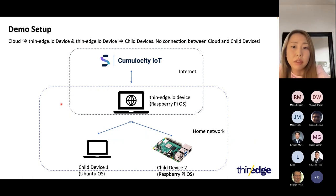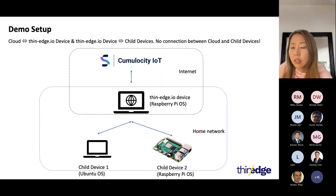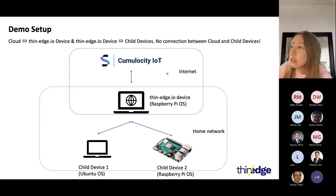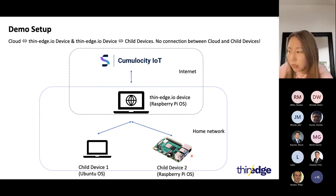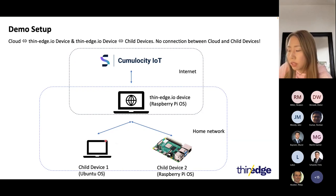I prepared a demo to show the firmware management feature in today's presentation. Here is my demo setup: thin-edge IO is installed and already running on a Raspberry Pi, which is already connected to Cumulocity. I also have two other devices — one is a laptop and the other is another Raspberry Pi — both located in my home network, and the child connector program is running on both devices.